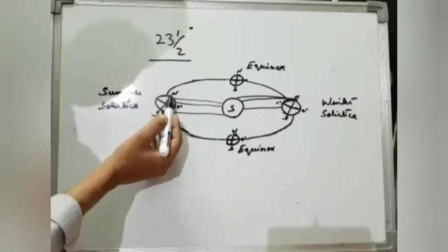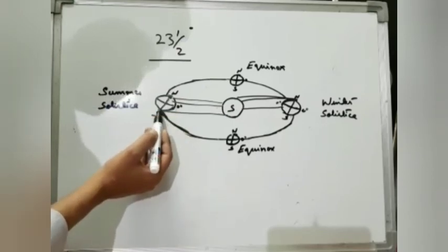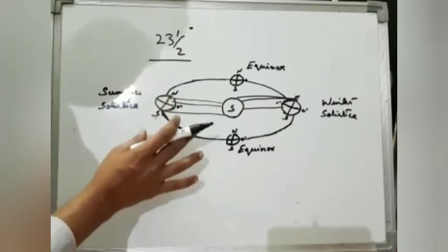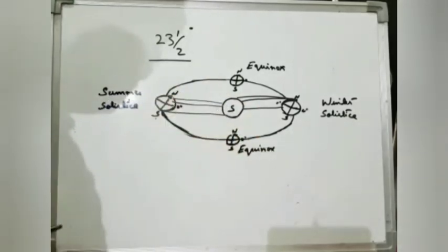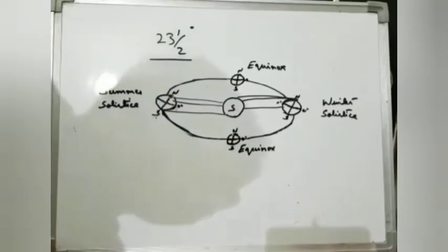That's why most of the time we call it six-month day and six-month night. It is very important for all of you to understand why days become longer and why they become shorter. So this is a short video to understand about the revolution.